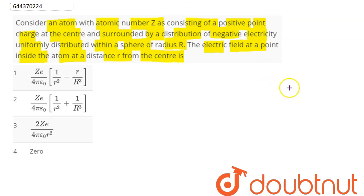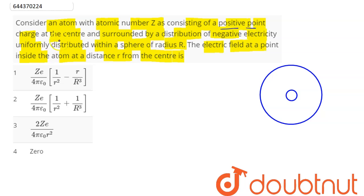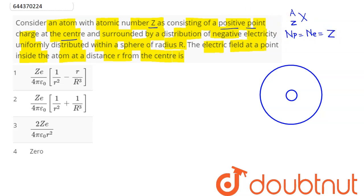Suppose this is our nucleus of the atom, where the positive point charge is located, and in the remaining space of the atom, negative charge is uniformly distributed within the sphere of radius R. For an atom of atomic number Z, the number of protons and number of electrons is equal to Z.